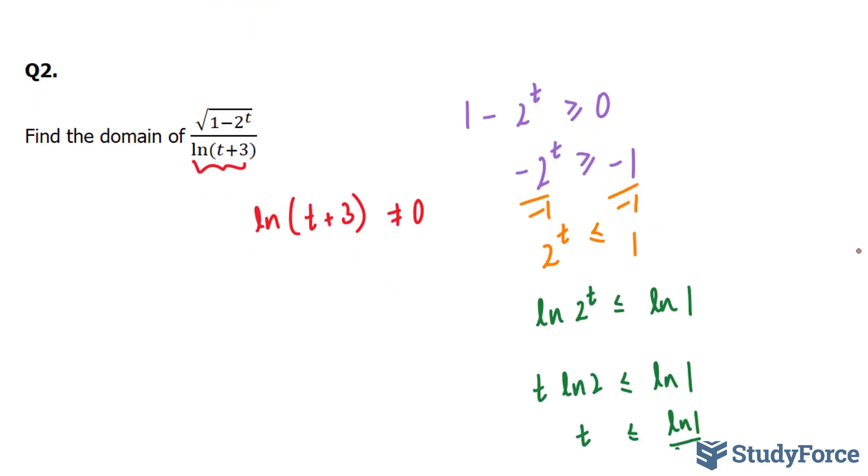So to solve for t, we're going to take both sides as powers to the base e. That's the only way you can isolate for t by canceling out this natural log. Here's what I mean: e^ln(t+3) cannot equal e^0.